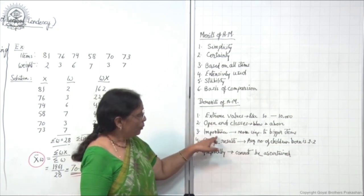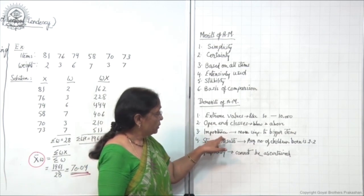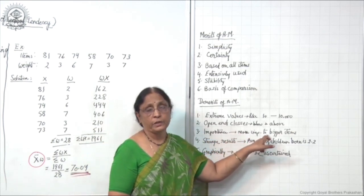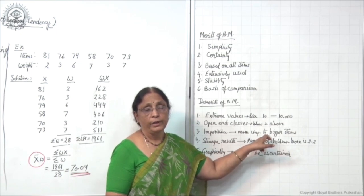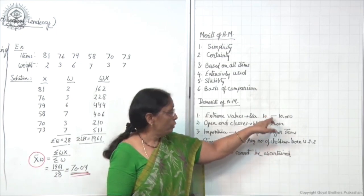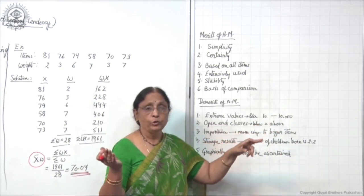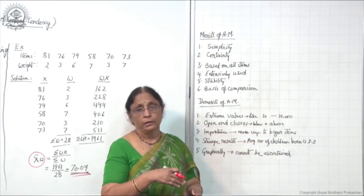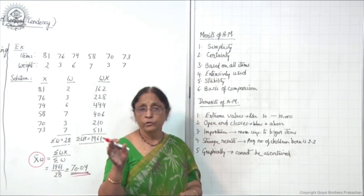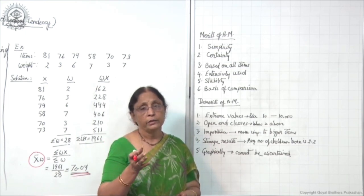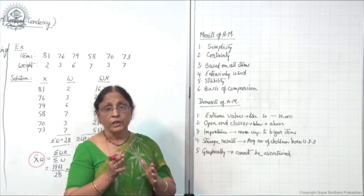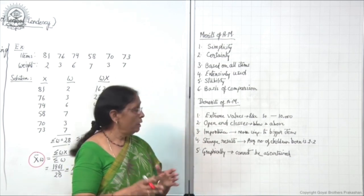The third demerit is regarding importance. Sometimes more importance is given to bigger items — meaning bigger values — and as mentioned, bigger values will change your data. So more weightage is given towards the bigger value, and sometimes the result may not be very accurate.